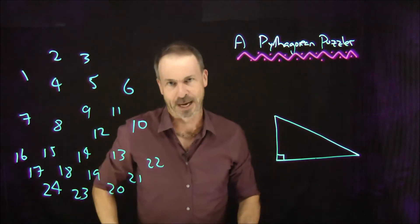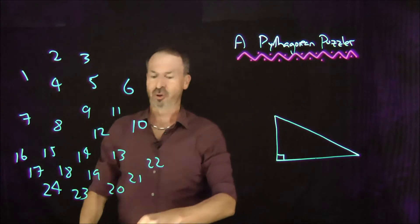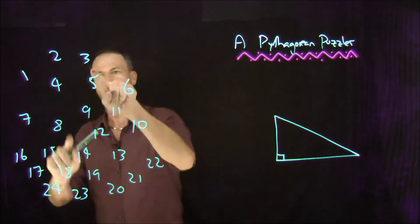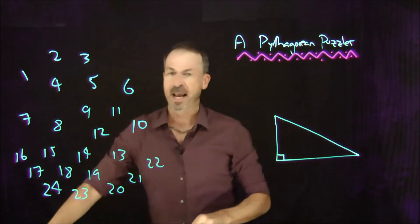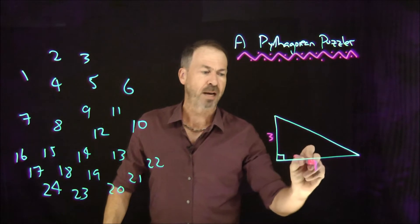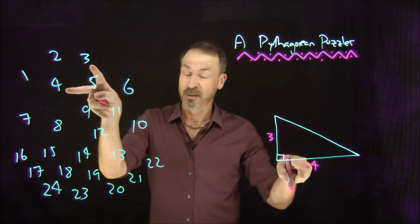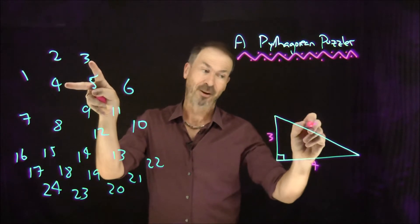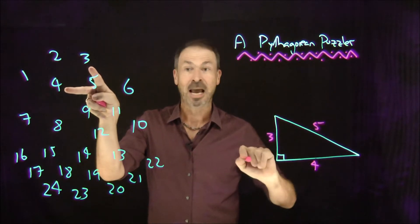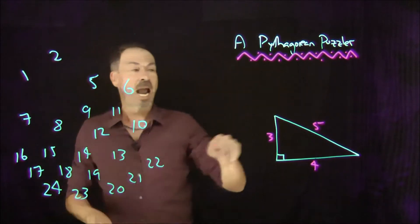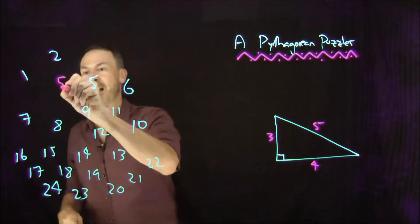And here's the game I'm going to play. I'm going to choose two numbers. I'll choose two nice ones to begin with, say 3 and 4. I'm going to write them as the legs of a right triangle. Those two are chosen. And then I'm going to use Pythagorean theorem to compute what the hypotenuse has to be. Classic, it has to be 5 in this case. And I'm going to erase the two numbers I chose, 3 and 4, and replace them with the hypotenuse, 5.